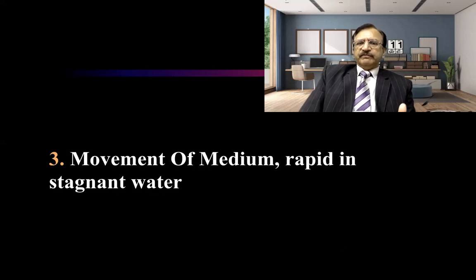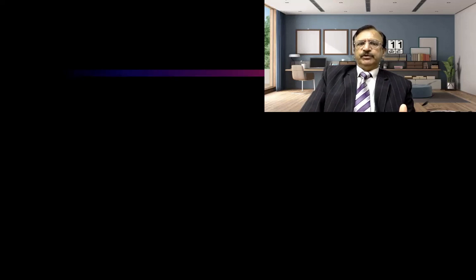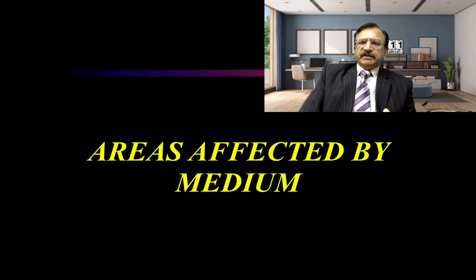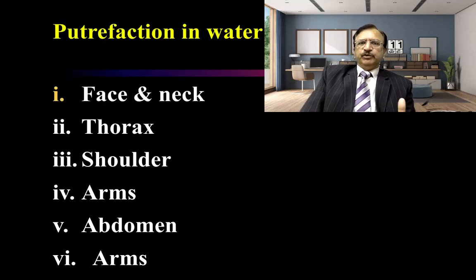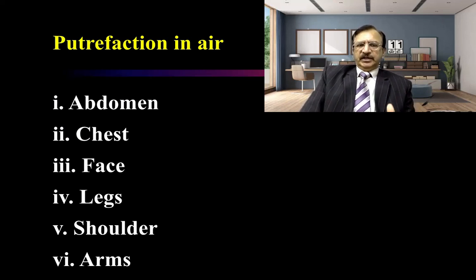Regarding movement of water: putrefaction is rapid in stagnant water. The presence of animals like fish can hasten putrefaction. The areas affected differ by medium: in water, putrefaction first takes place in the face and neck, then thorax, shoulder, arms, and abdomen last. In air, the abdomen, chest, and face are affected first, then the arms — the reverse order compared to water.